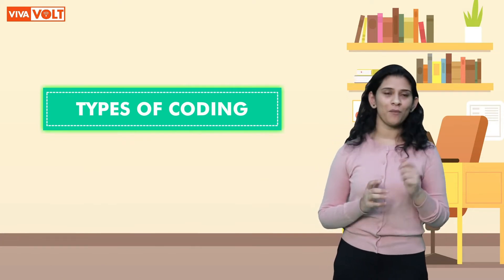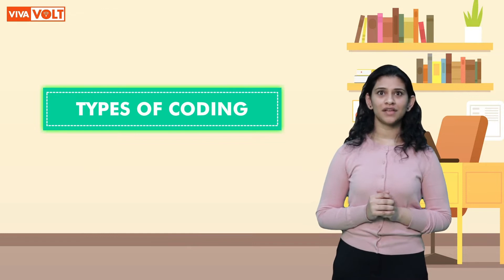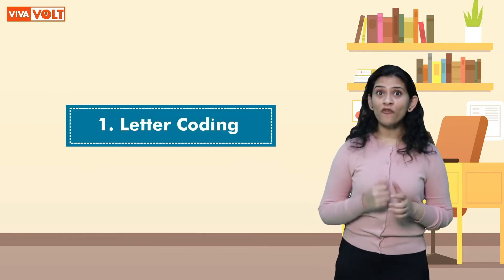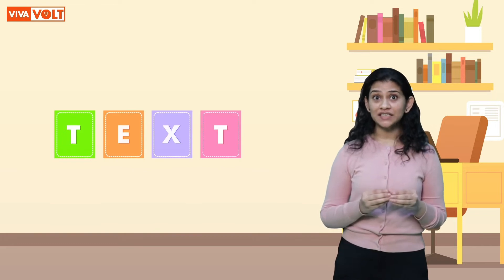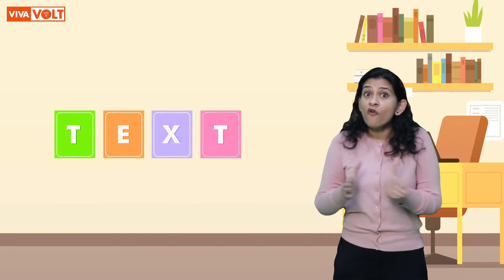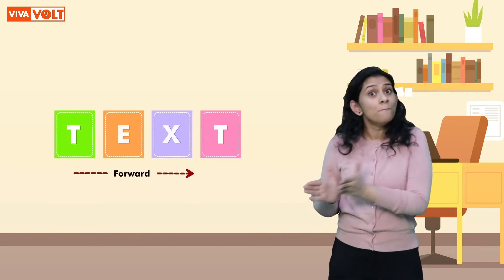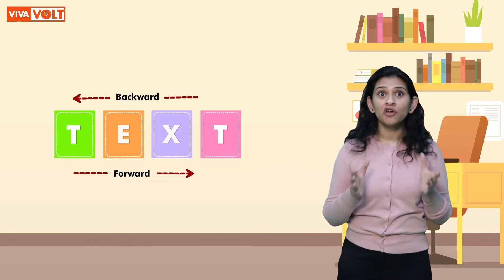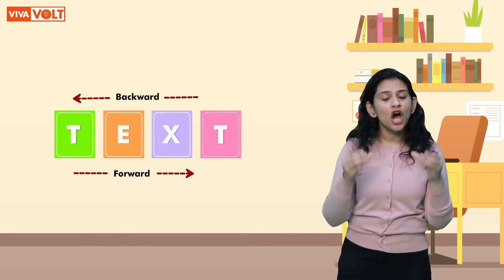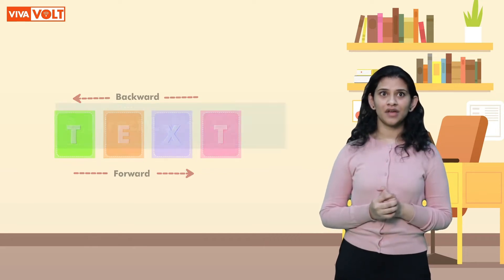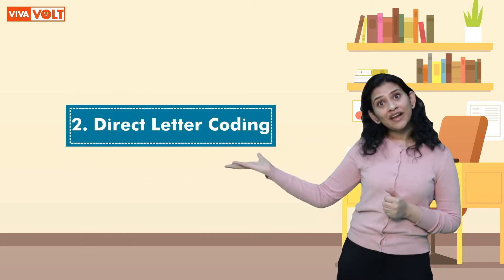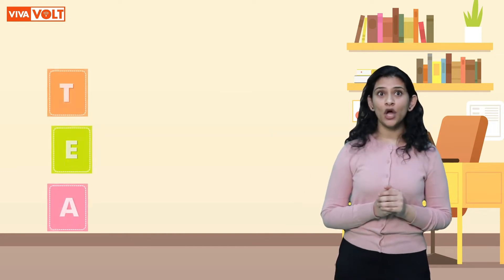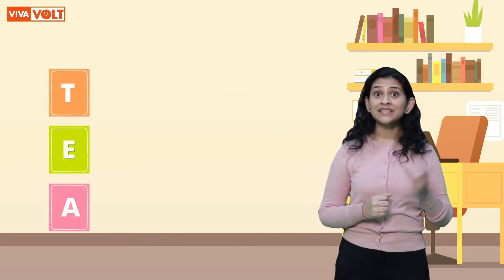The process is pretty simple. Now let's have a look at different types of coding. There are different types of coding; let's learn about them one by one. Letter coding: in this type of coding, we arrange the letters in forward or backward direction, or in both, by creating a coded message. Direct letter coding: in this type of coding, we replace the letters of a word directly by other letters.